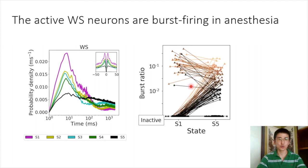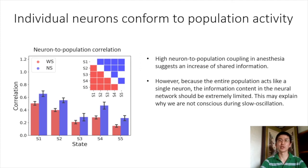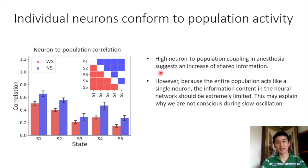Comparing burst activity between S1 and S5: each dot represents a single neuron. Burst ratio is defined as the ratio of burst activity — spikes with ISI less than ten milliseconds — to total number of spikes. In S1, there are many inactive neurons (spike rate less than one hertz), and the remaining active neurons have high burst ratio. In S5, many previously inactive neurons became active and burst ratio decreased. We then examined the relationship between individual neurons and population activity using cross-correlation between a single neuron's spikes and population spikes. High neuron-to-population coupling in anesthesia suggests increased shared information — but because the entire population acts like a single neuron, information content in the neural network is extremely limited, which may explain why we are not conscious during slow oscillations.